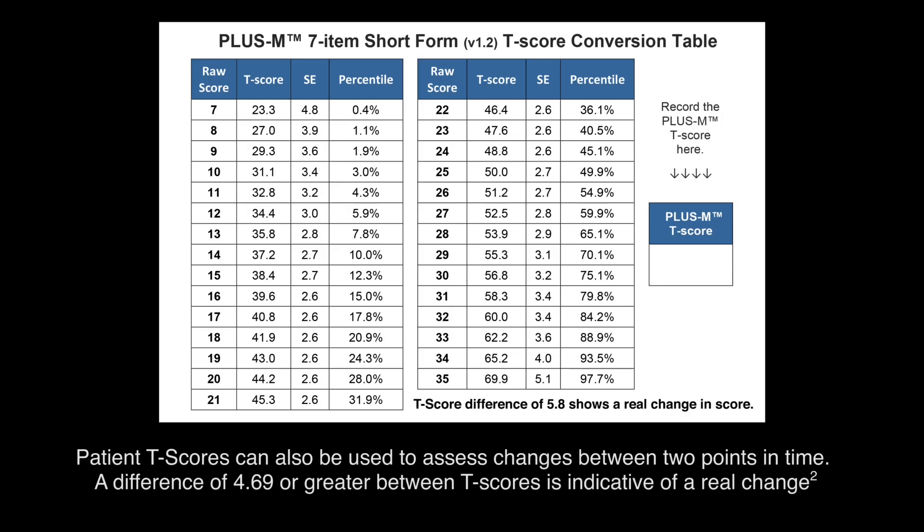Patient T-scores can also be used to assess changes between two points in time, such as before and after treatment. In our example, before treatment the patient had a T-score of 44.2, and after treatment they had a T-score of 50. The patient showed a real change because the difference in T-scores is greater than the minimal detectable change of 4.69 points.